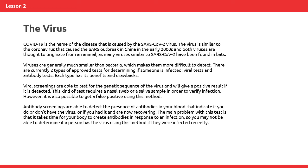There are currently two types of approved tests for determining if someone is infected: viral tests and antibody tests. Each type has its benefits and drawbacks. Viral screenings are able to test for the genetic sequence of the virus and will give a positive result if it is detected. This kind of test requires a nasal swab or a saliva sample in order to verify infection. However, it is also possible to get a false positive using this method. Antibody screenings detect the presence of antibodies in your blood that indicate if you do or don't have the virus, or if you had it and are now recovering. The main problem with this test is that it takes time for your body to create antibodies, so you may not be able to determine if a person has the virus if they were infected recently.